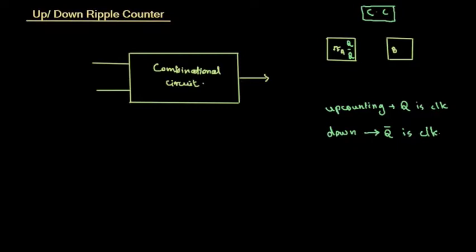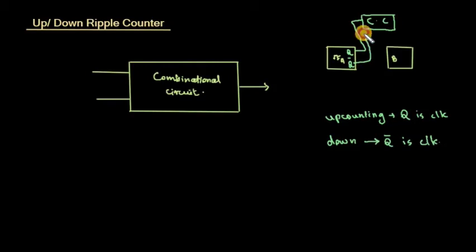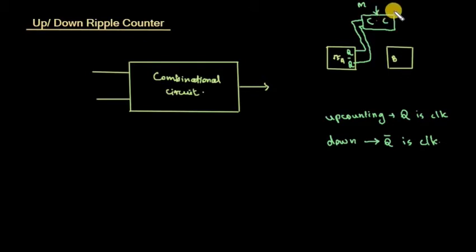In this combinational circuit, we can use Q and Q-bar. This determines whether we are performing up counting or down counting.